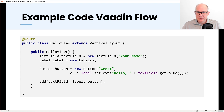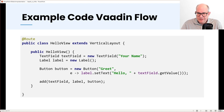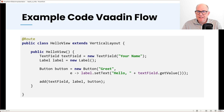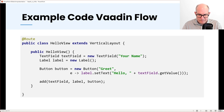Here we have a very simple example. We have a route — that's the hello view. It extends from a layout; Vaadin comes with a few different layouts you can use. We see how we create the UI. If you know Swing, AWT, or maybe Eclipse RCP and SWT, then this programming model will be very familiar to you — it's exactly the same as creating Java desktop applications. You create a text field, a label, you add a button where the second parameter in the constructor is the click listener, and finally you add the text field, the label, and the button to the vertical layout.